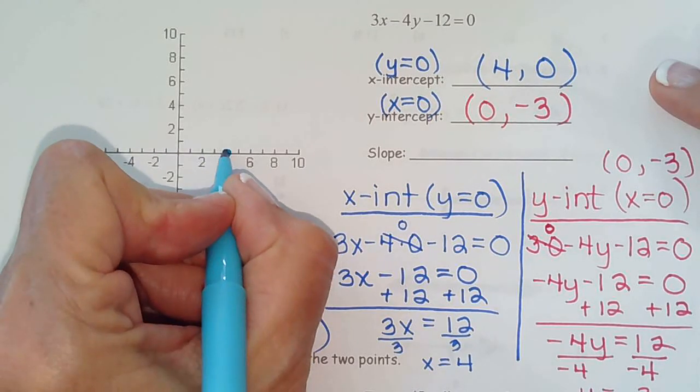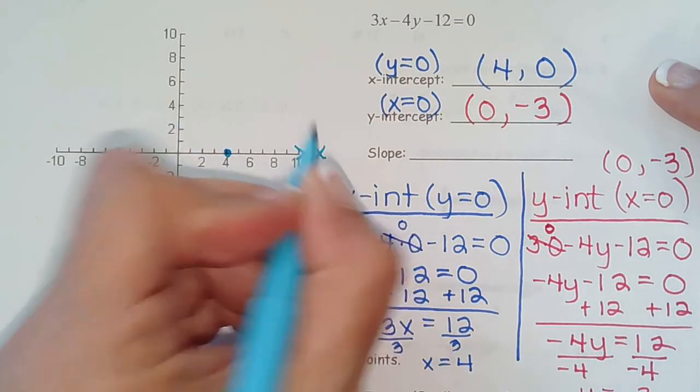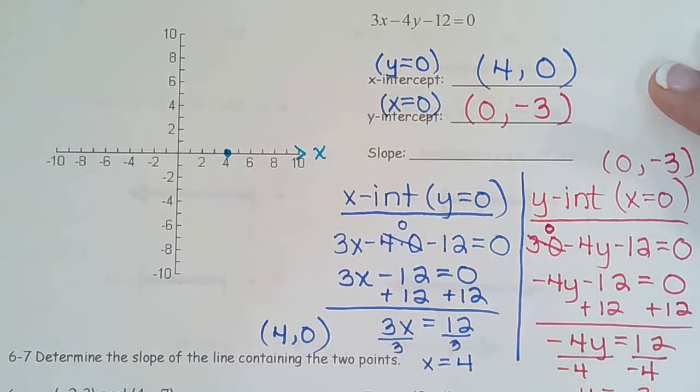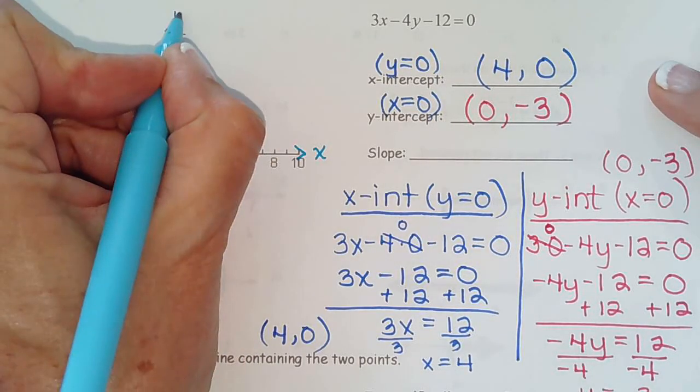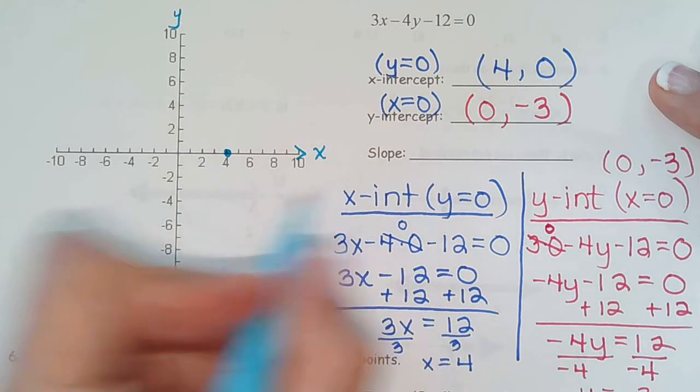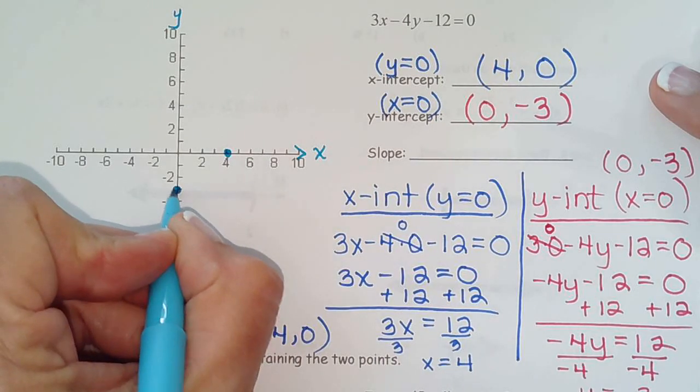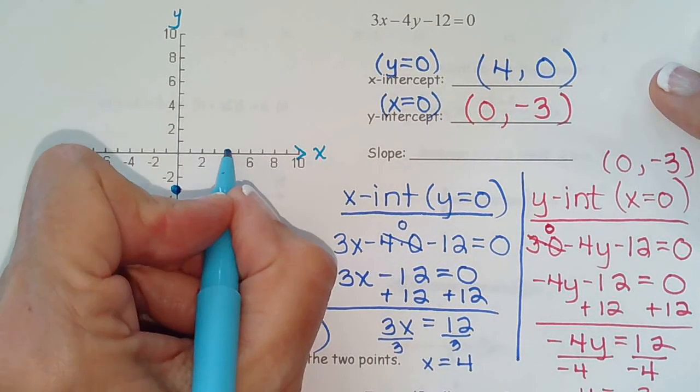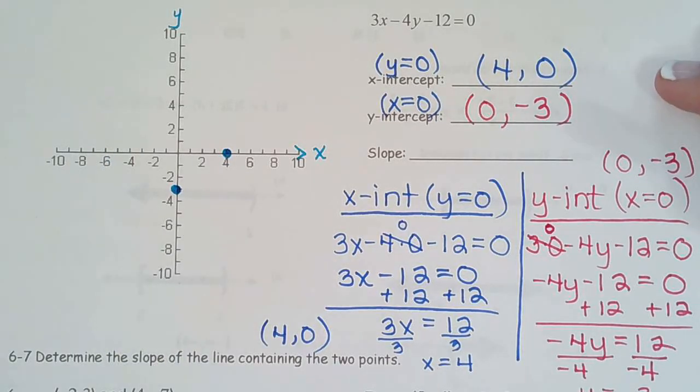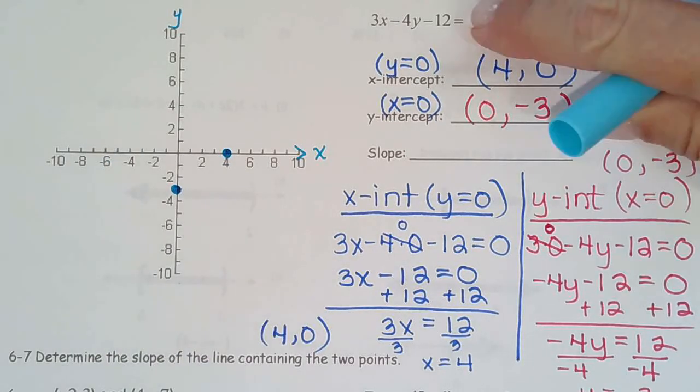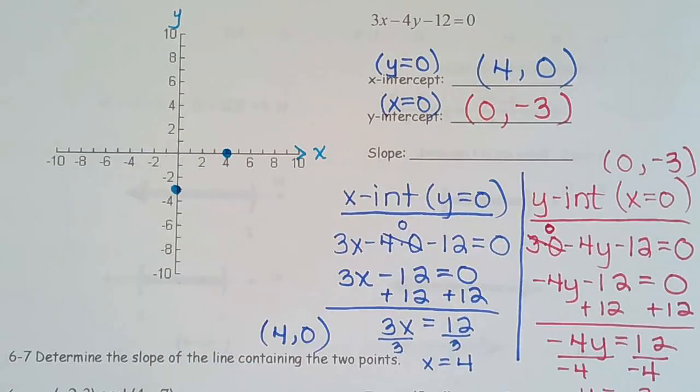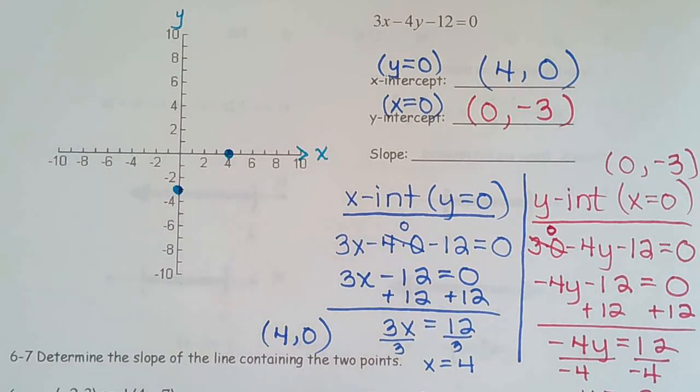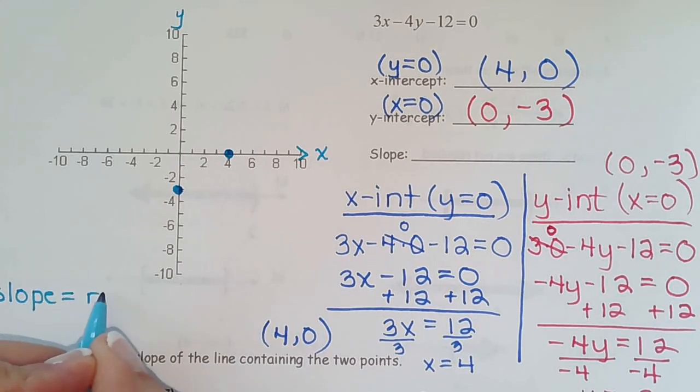And notice it is indeed on the x-axis where it should be because it's called the x-intercept. And then on the y-axis, we're going to plot the point zero, negative three. And we can either find the slope from solving this equation or we can find the slope from the graph. So let's do it both ways and then it's kind of a nice little check. So slope, we know, is rise over run. Let's put it right here. Slope equals rise over run.